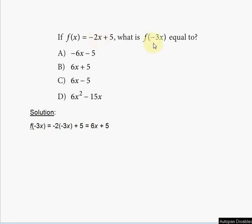So f(-3x) = -2(-3x) + 5, because the old x is replaced with -3x. And then that turns into 6x plus 5.